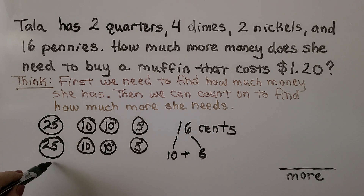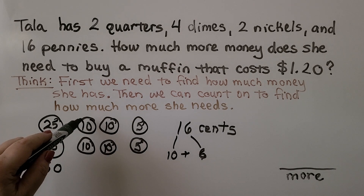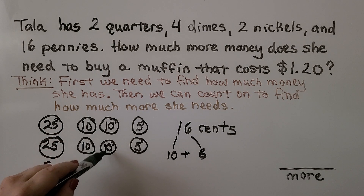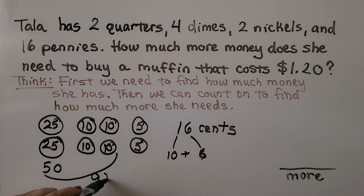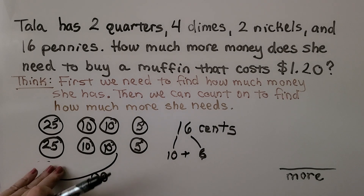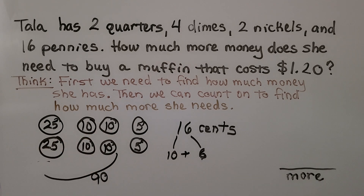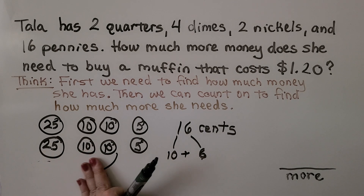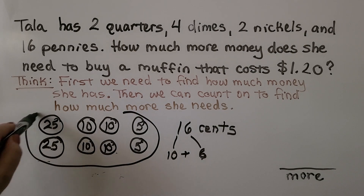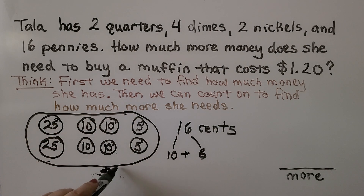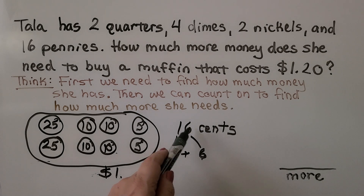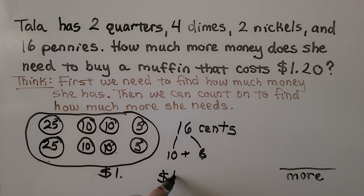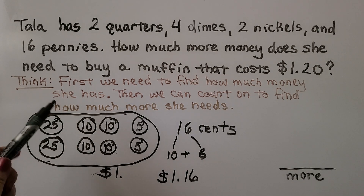25 and 25 makes 50 cents. Then 60, 70, 80, 90 cents — so with all the quarters and dimes we're at 90 cents. We have 5 and 5 is 10, so 90 and 10 makes a dollar. That means all those coins make one dollar. And then she's got 16 cents, so she has one dollar and 16 cents. She needs one dollar and 20 cents to buy the muffin.